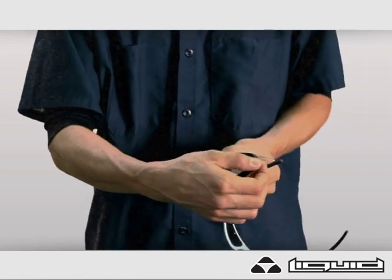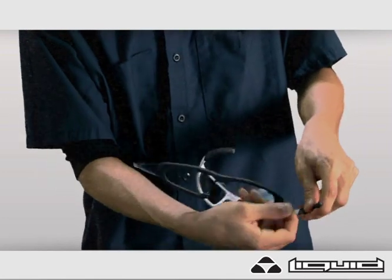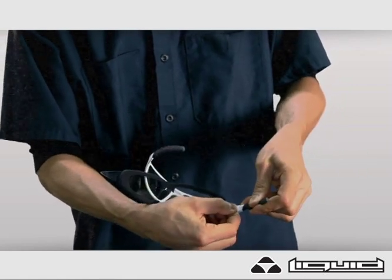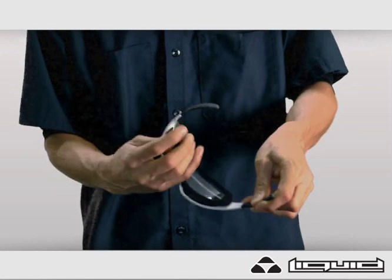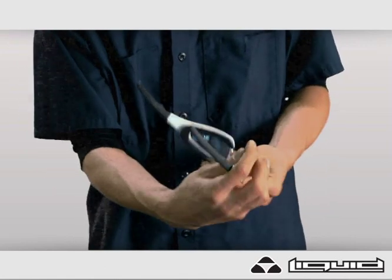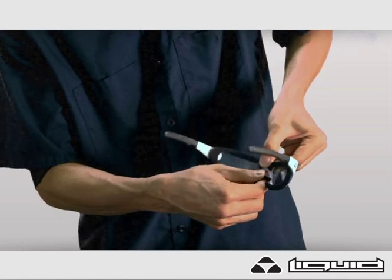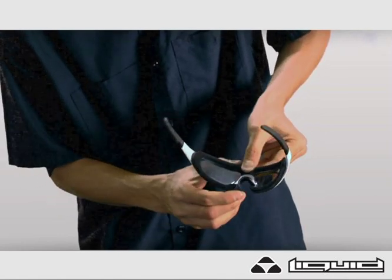Loosen the rubber arms using a small screwdriver if necessary. In many cases, a screwdriver may not be needed. Insert the arms of the foam or optical insert under the rubber arms of your Liquid Eyewear frame. Press the insert into place and replace the nose piece, making sure it sits over the insert and under the bridge hooks.